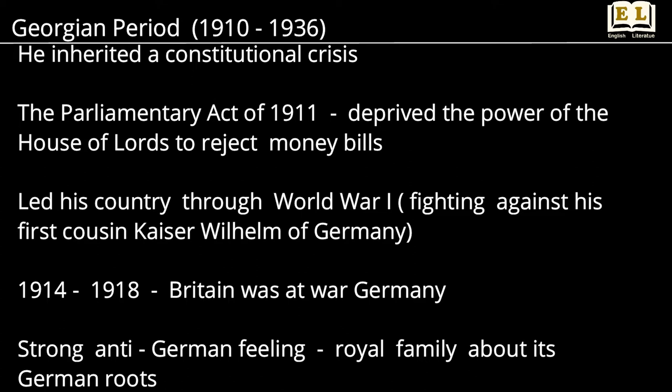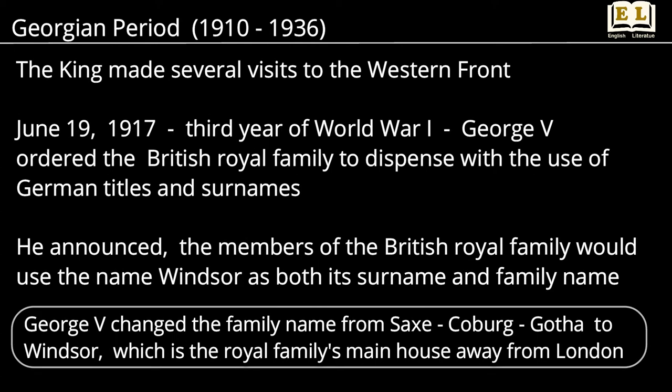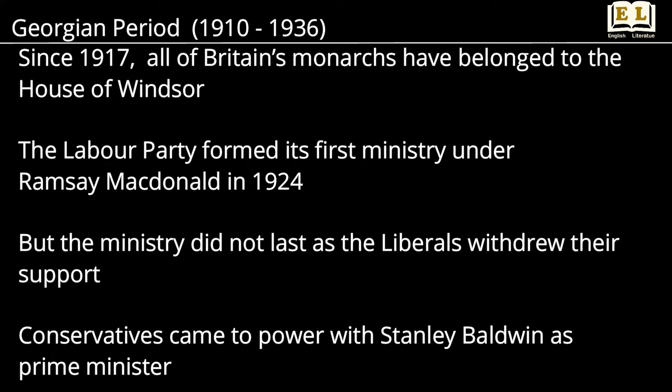With the outbreak of war, strong anti-German feeling within Britain caused sensitivity among the royal family about its German roots. To stress his support for the British, the king made several visits to the Western Front. On June 19, 1917, during the third year of World War I, George V ordered the British royal family to dispense with the use of German titles and surnames. He announced that members of the British royal family would use the name Windsor as both its surname and family name. Since 1917, all of Britain's monarchs have belonged to the House of Windsor.